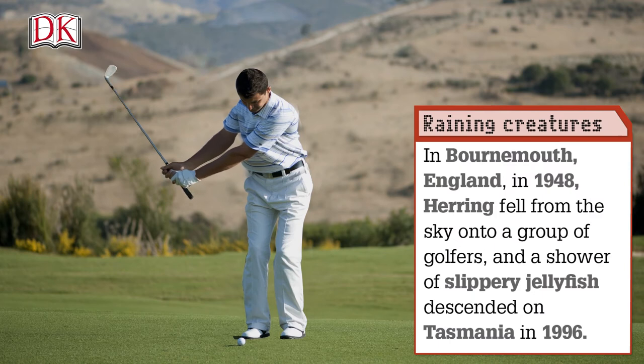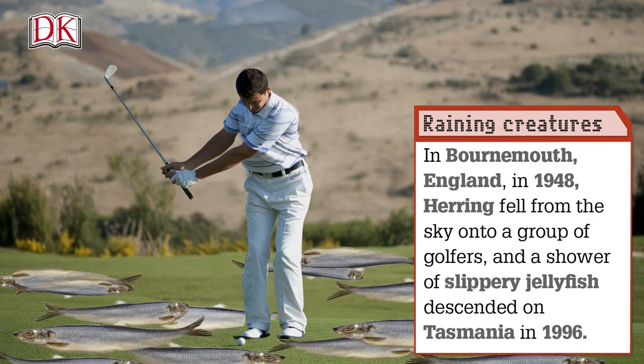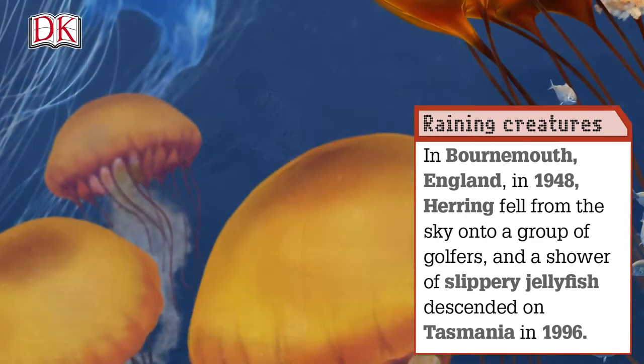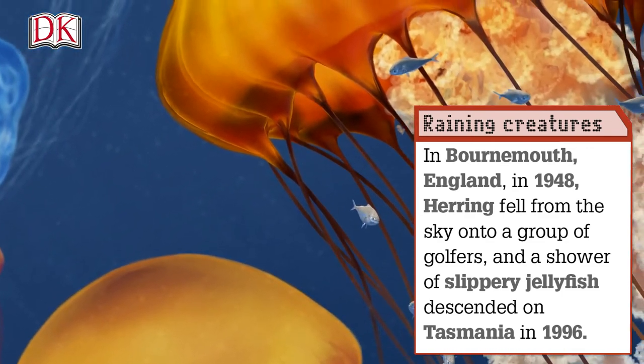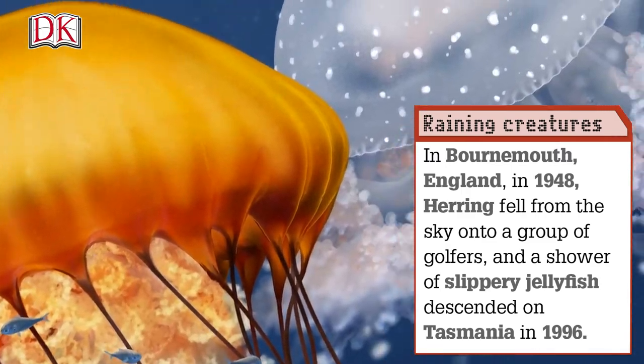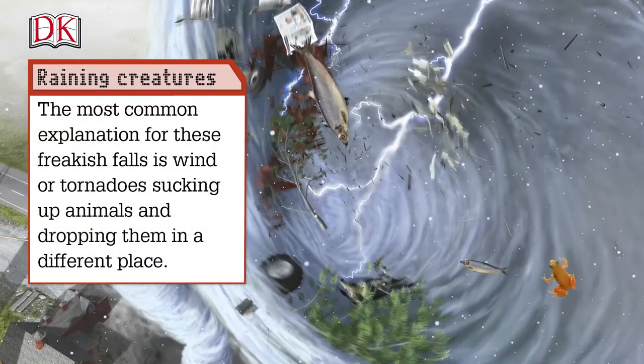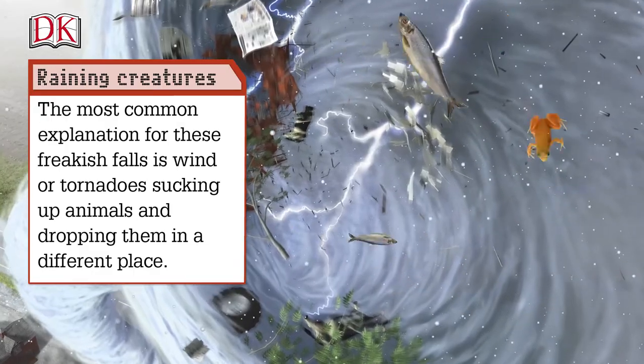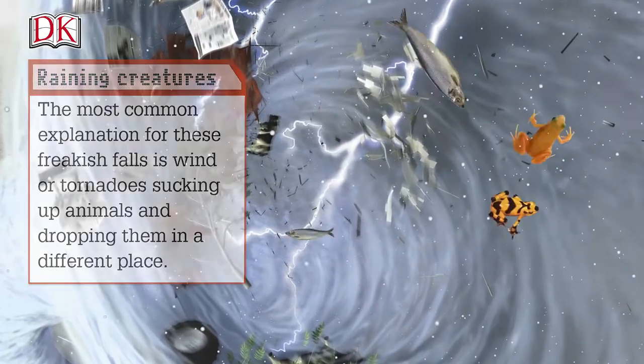In Bournemouth, England, in 1948, a herring fell from the sky onto a group of golfers, and a shower of slippery jellyfish descended on Tasmania in 1996. The most common explanation for these freakish falls is wind or tornadoes sucking up animals and dropping them in a different place.